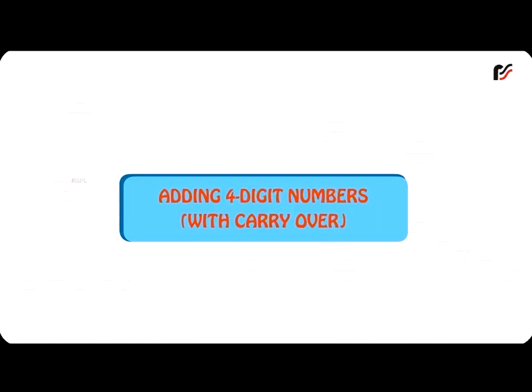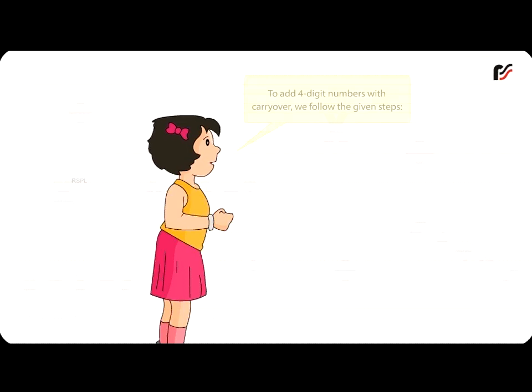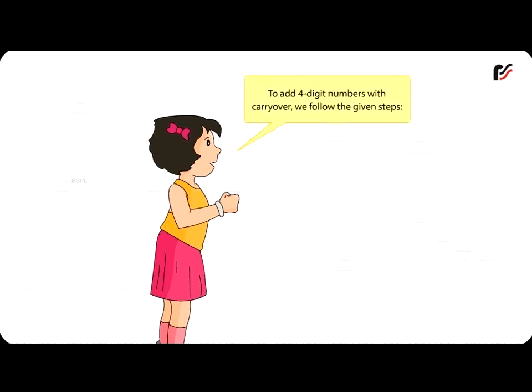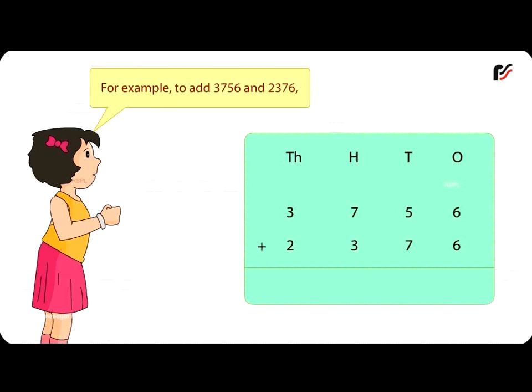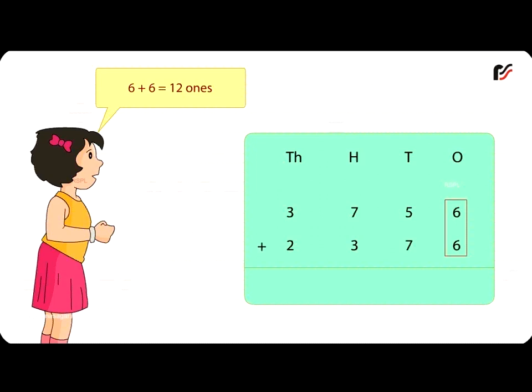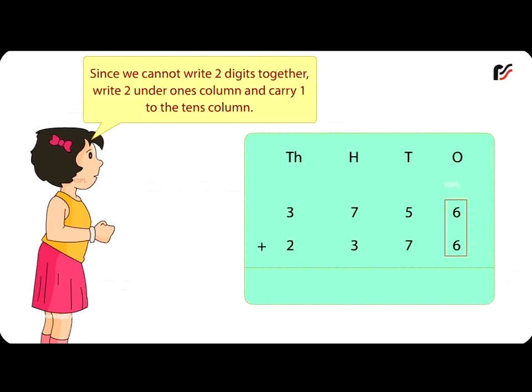Adding 4-Digit Numbers with Carryover. To add 4-digit numbers with carryover, we follow the given steps. For example, to add 3,756 and 2,376. First add the 1's. 6 plus 6 is equal to 12 1's. Since we cannot write 2 digits together, write 2 under 1's column and carry 1 to the 10's column.